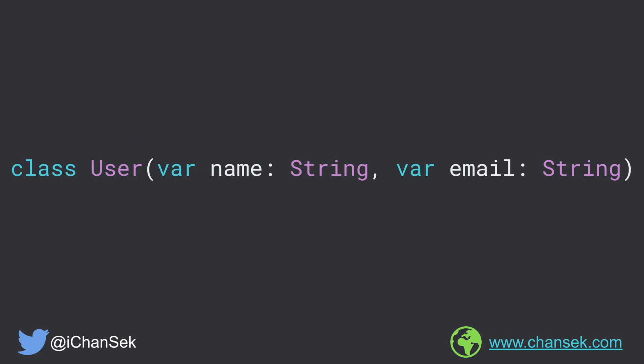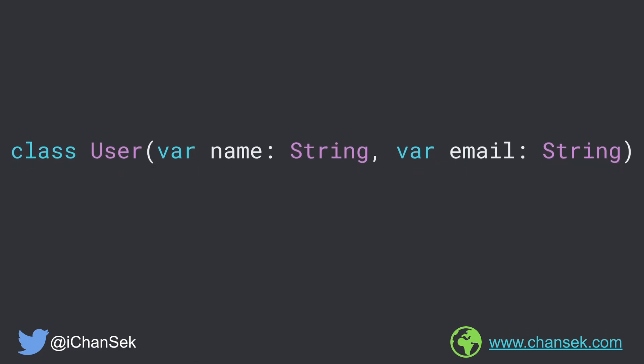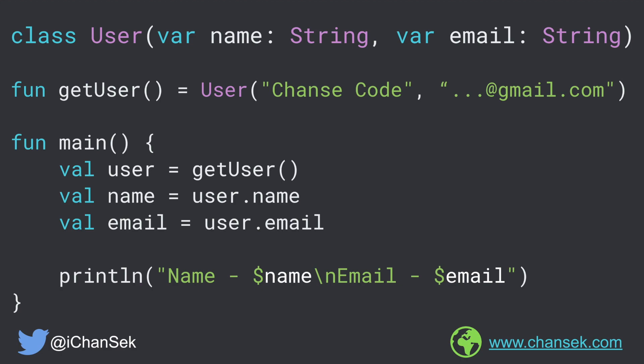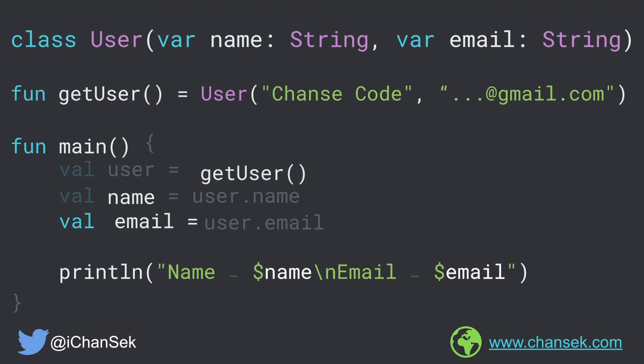Let's consider that we have a class called User which has name and email as two properties, and we have a method called getUser which returns a User object. In the usual way, if we want to access this User object, we have to call the getUser method and from there access the name and email properties using the reference of the User object. Notice that we have to write at least three lines of code. Wouldn't it be nice if getUser could return multiple values and we could trim down the code to something like this?